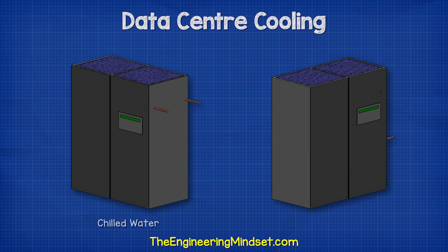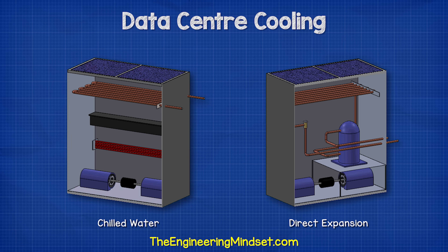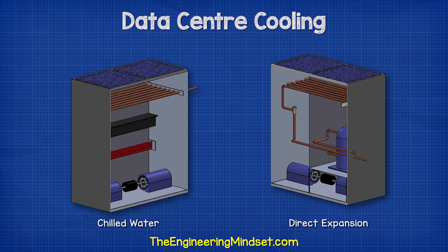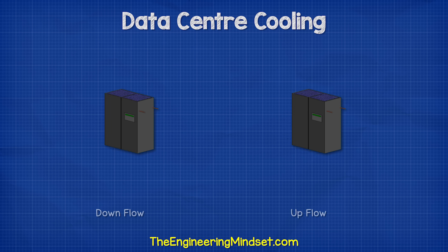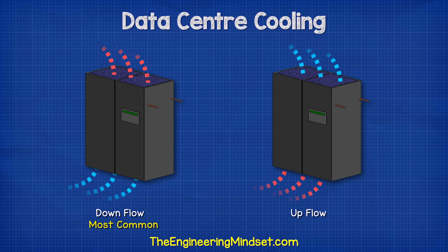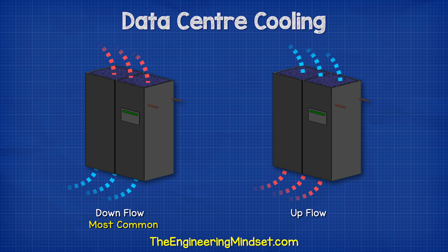When it comes to CRAC units, we have two main types: chilled water and direct expansion. We also have upflow and downflow, which indicates the direction the cold air flows. Downflow is the most common, so we will focus on this type.